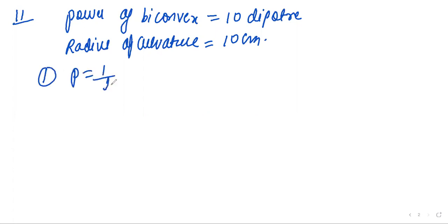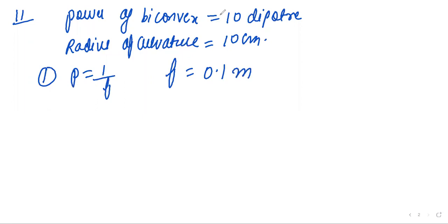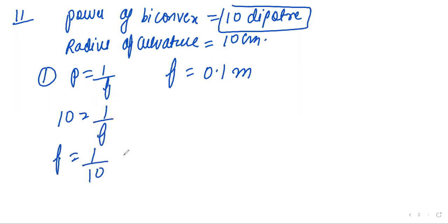Power is equal to 1/f, so f is coming out to be 0.1 meter. Due to the power value: 10 = 1/f, so f = 1/10 = 0.1 meter.